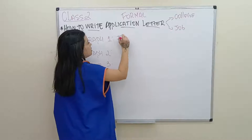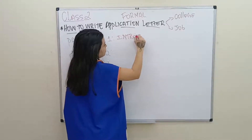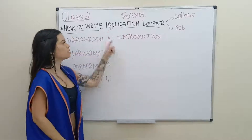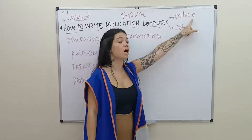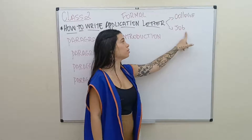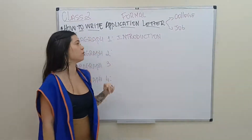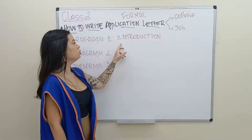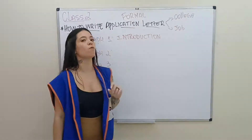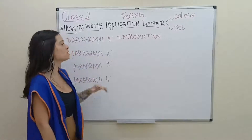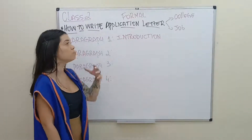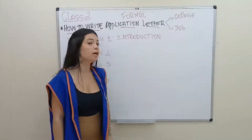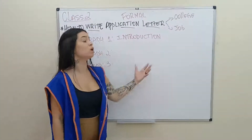Paragraph one is always going to be an introduction. So, you are going to tell the person — the head of the college, the human resources of your dream job — what you are looking for inside that company, the reason why you wrote to that college, the reason why you want to be part of that college or that job group, why you want to be an employee at the company.